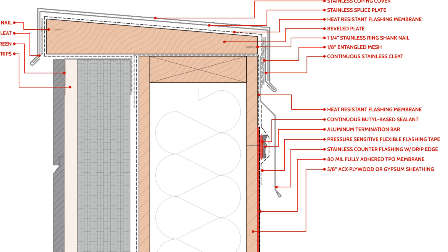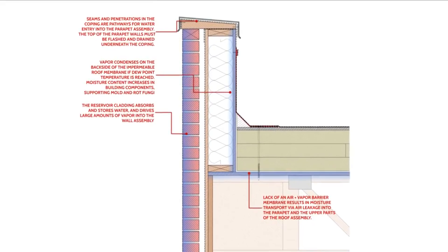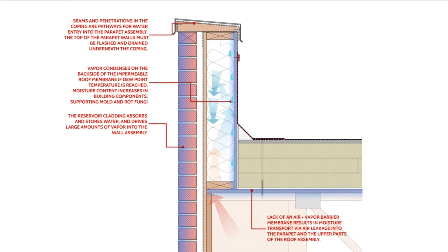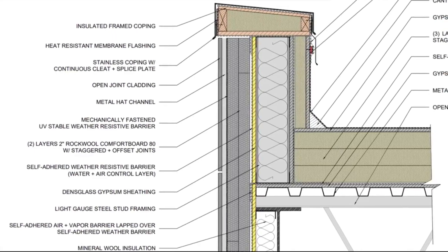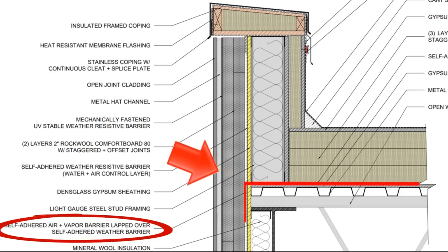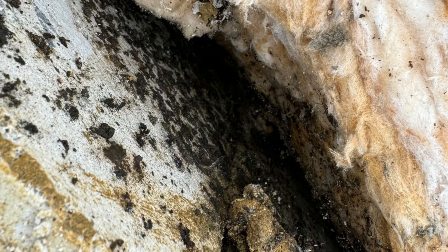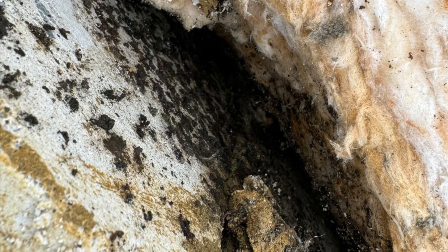Ideally, we would want that counter flashing to be tied back to the coping. We also have to deal with air leakage condensation in parapets, and that's almost always from air leaking into the parapet from the interior where the bottom plate sits on top of the roof deck. This location is notorious for air leakage, so it's best practice to lap the air barrier membrane on top of the roof down over the weather-resistive barrier at this location to completely uncouple the parapet framing from the roof and wall framing below, as moisture-laden air from the interior can migrate up into the parapet and find a condensing surface.